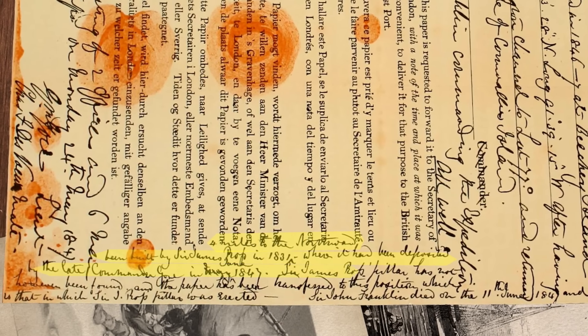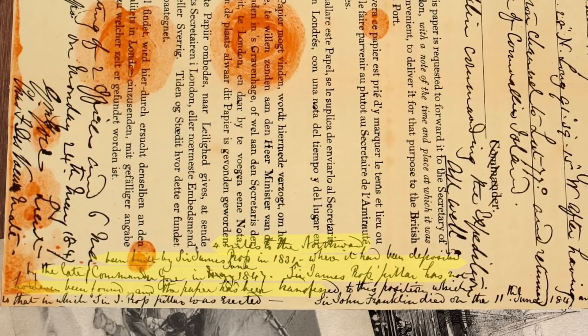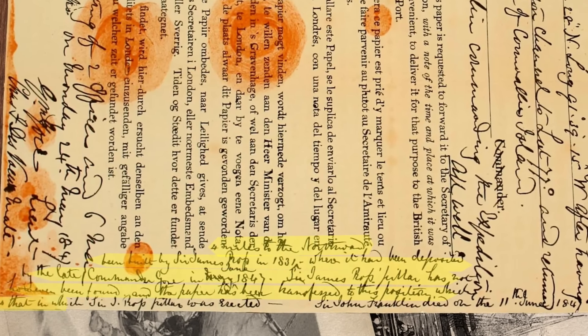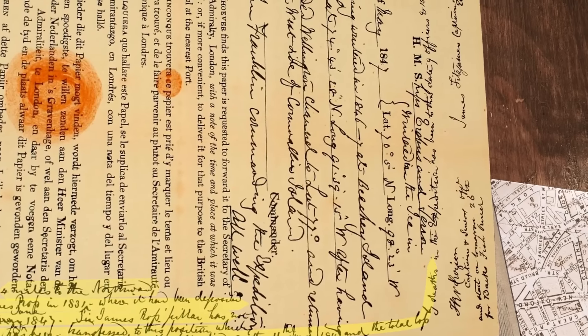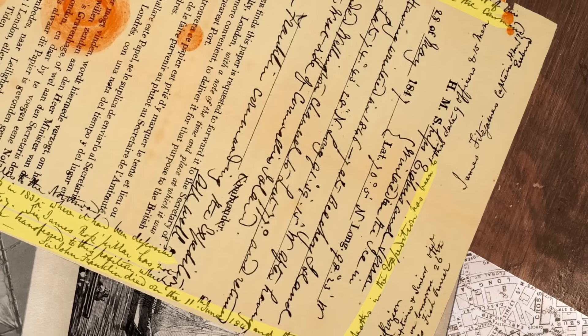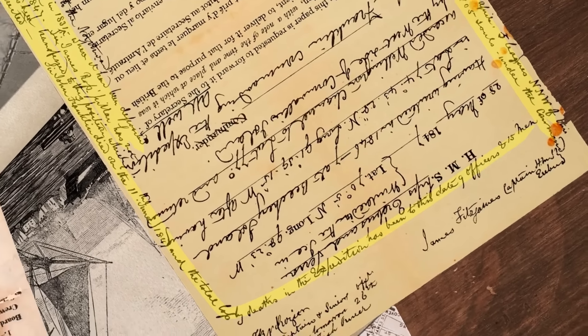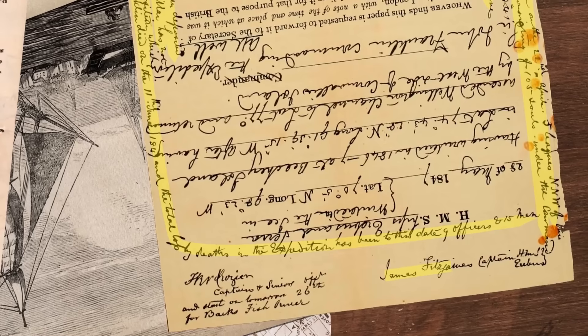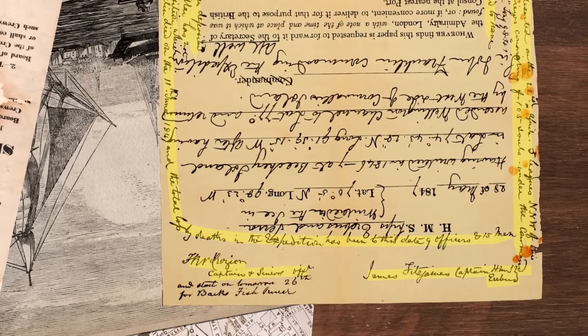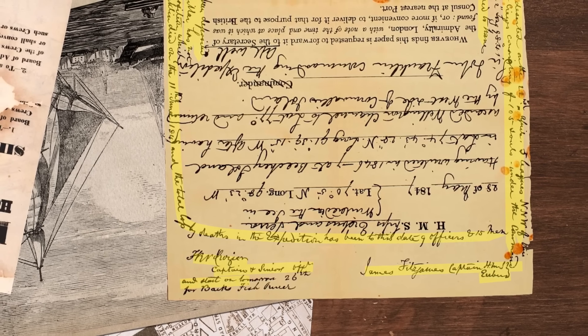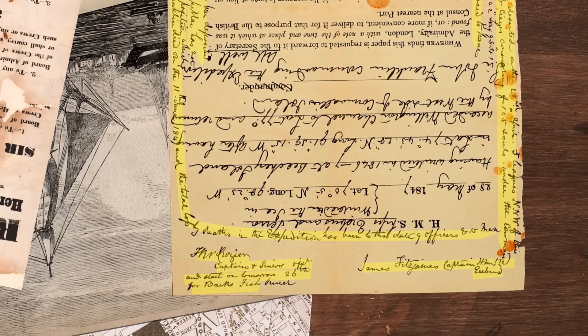This paper was found by Lieutenant Irving under the cairn supposed to have been built by Sir James Ross in 1831, four miles to the northward, where it had been deposited by the late Commander Gore in May-June 1847. Sir James Ross's pillar has not however been found, and the paper has been transferred to this position which is that in which Sir J. Ross's pillar was erected. Sir John Franklin died on the 11th of June 1847, and the total loss by deaths in the expedition has been to this date nine officers and 15 men. James Fitzjames, Captain HMS Erebus, Crozier Captain and Senior Officer, and start on tomorrow, 26th for Back's Fish River.